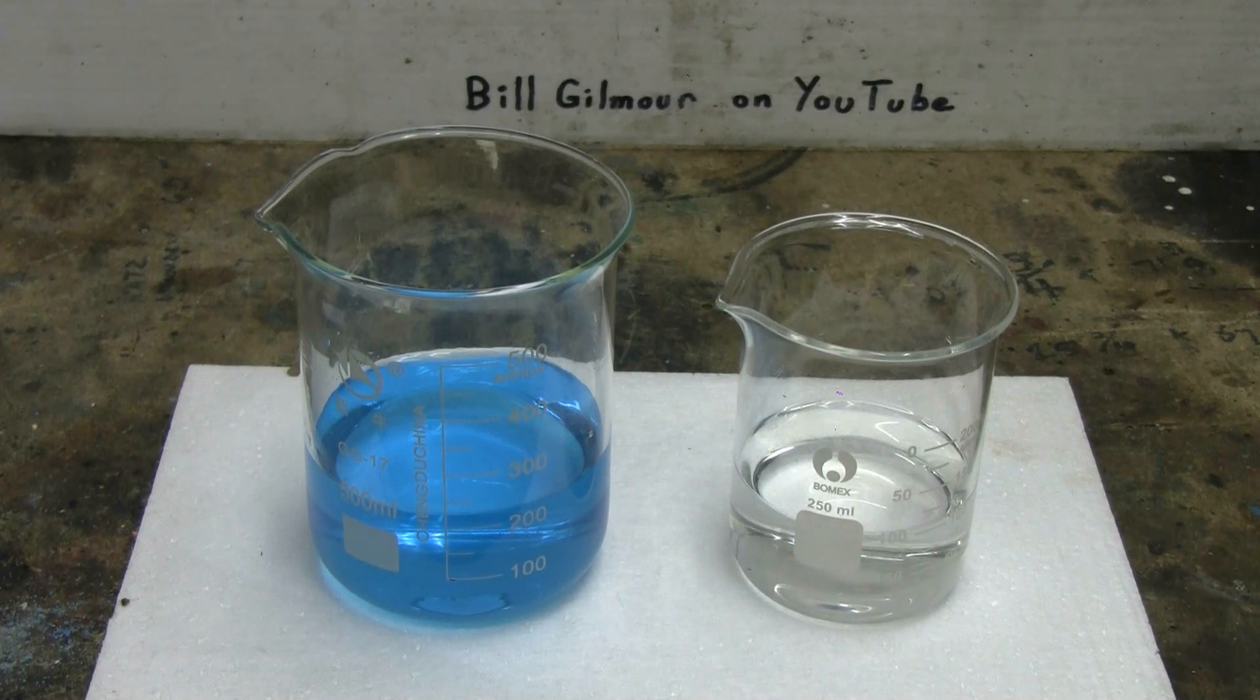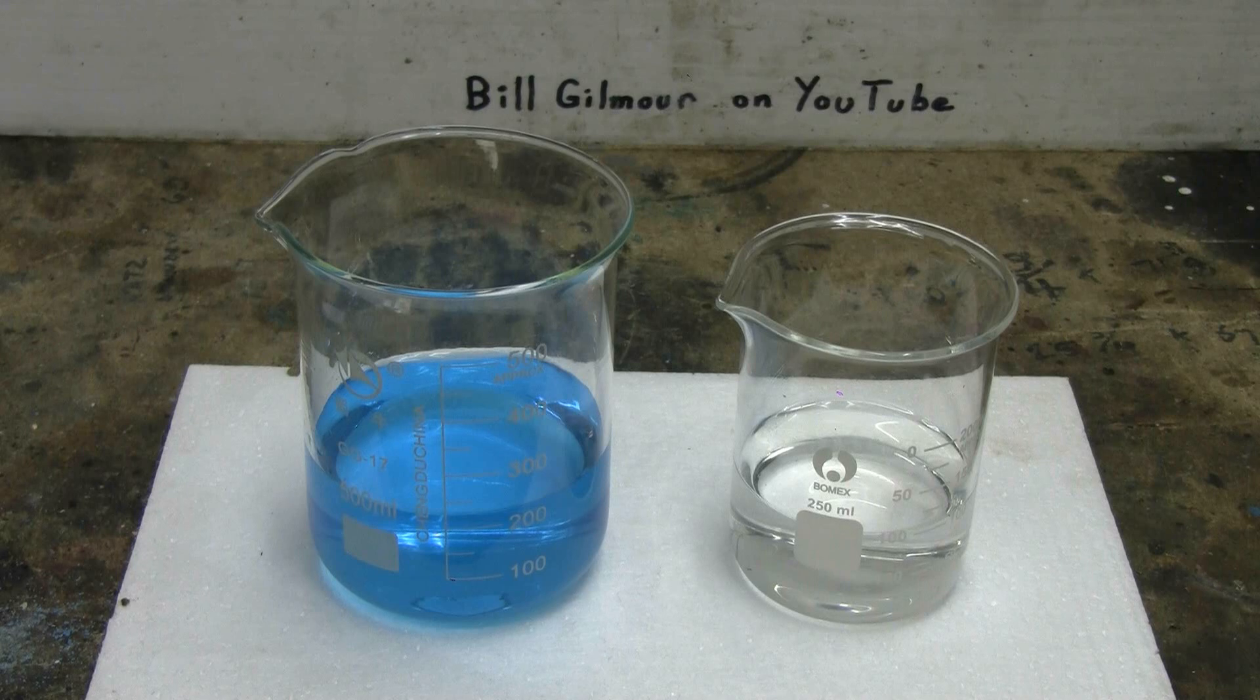To prepare Chevreul salt, in the 500 milliliter beaker on the left, I've taken 12 grams of copper sulfate and dissolved it in 200 milliliters of water. The beaker on the right is a 250 milliliter beaker. I've dissolved 10 grams of sodium metabisulfite into 100 milliliters of water.